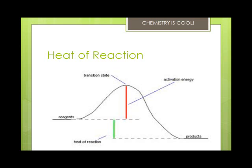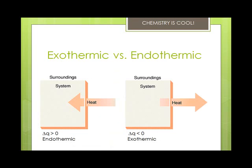Heat is denoted by the symbol Q. If the sign of Q is positive, then heat is absorbed by the system — so it's endothermic. If the sign of Q is negative, then heat is evolved by the system, or it's exothermic, because heat is leaving, so it feels hot. The heat of reaction is the value of Q required to return a system to the given temperature at the completion of a reaction. An exothermic process is one in which heat is evolved, so Q is negative. An endothermic process is one in which heat is absorbed, so Q is positive. Exothermicity means out of a system, and endothermicity means into a system.